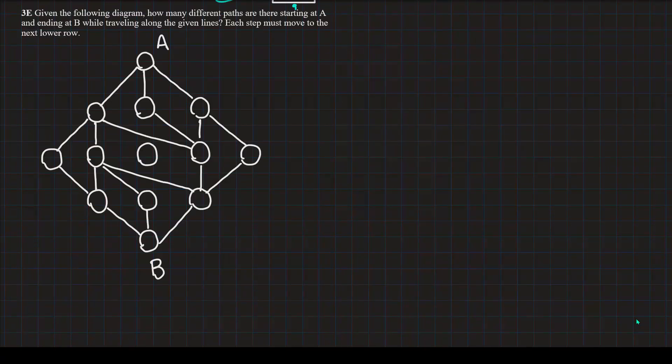So, here is the final question. Again, often this is the most challenging and the most difficult to solve. So, here we are given a diagram and we're being asked how many different paths are there starting at A, starting at A, and ending at B, while traveling along the given line. Another requirement is that each step that we move must move to the next lower row.